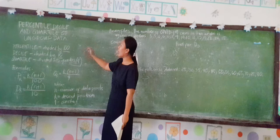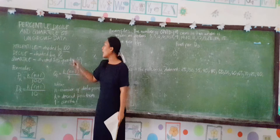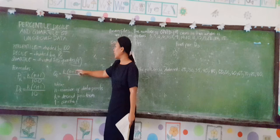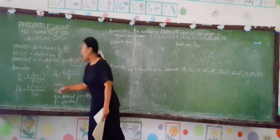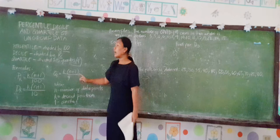Here are the formulas for percentile, decile, and quartile. For percentile: P sub K equals K times (N plus 1) over 100. For decile: D sub K equals K times (N plus 1) over 10. For quartile: Q sub K equals K times (N plus 1) over 4. The formulas are the same; the only difference is the denominator — 100 for percentile, 10 for decile, and 4 for quartile. N equals the number of data points, K is the desired position, and 1 is a constant.